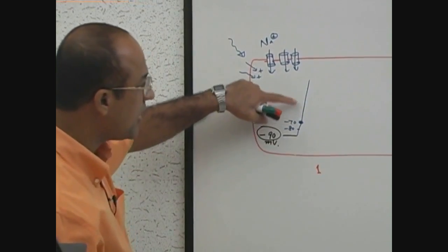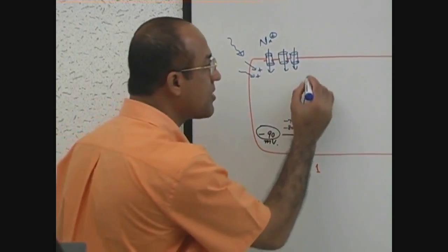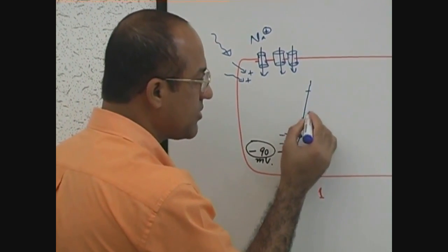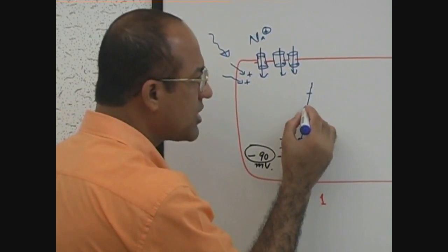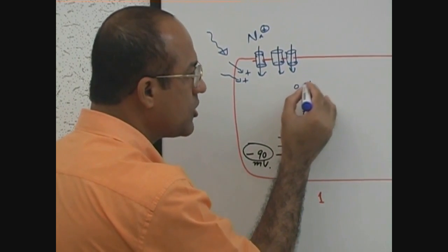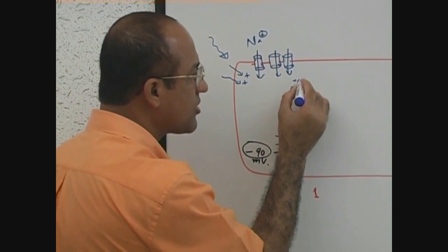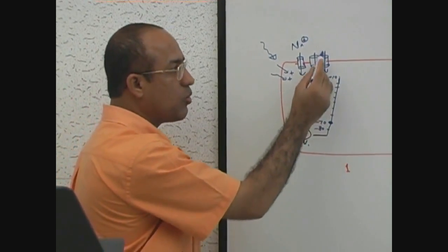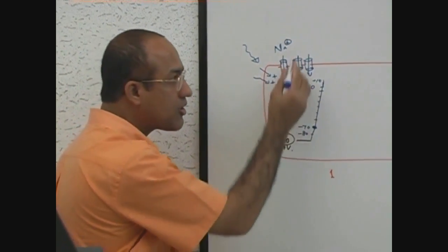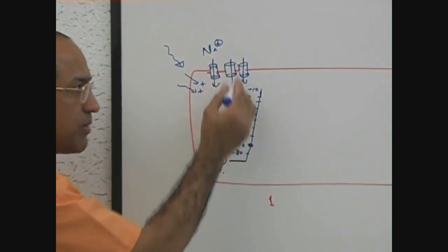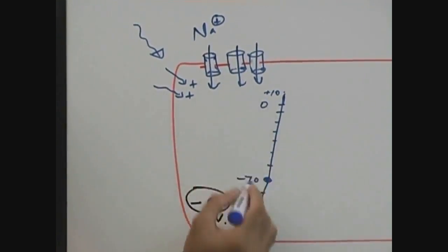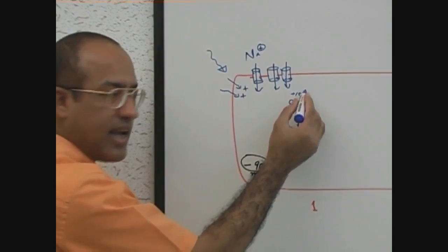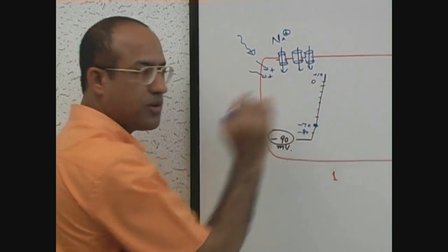Initially the membrane is losing its electronegativity and eventually may become positive — for example, minus 60, minus 50, minus 40, minus 30, minus 20, minus 10, 0, and even plus 10. Once the voltage-gated sodium channels open and a lot of sodium comes in, this movement of sodium inside neutralizes the resting membrane potential and takes it toward electropositivity.